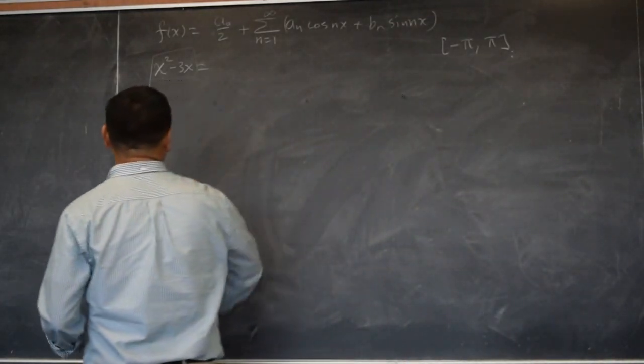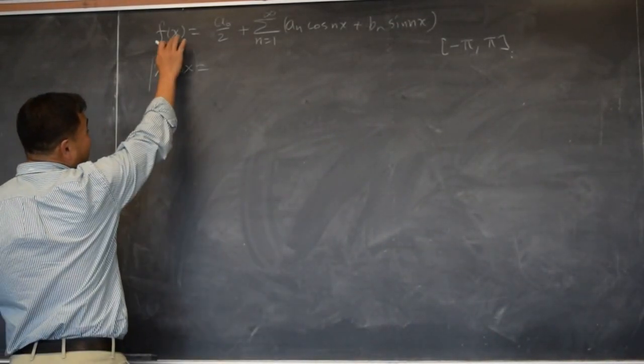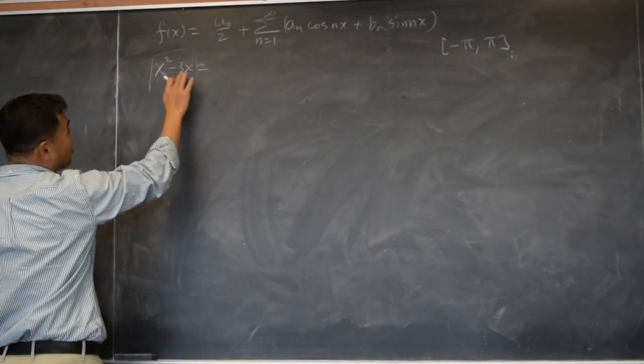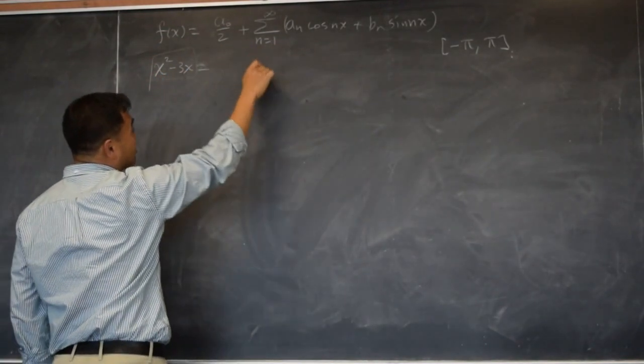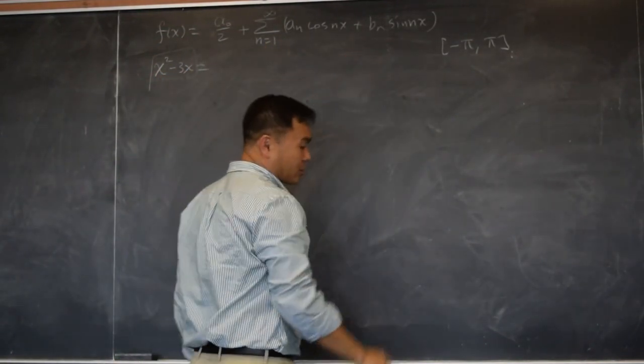So a moment ago, we did the Fourier series of x squared minus 3x using this, and we wrote down some big formula here.